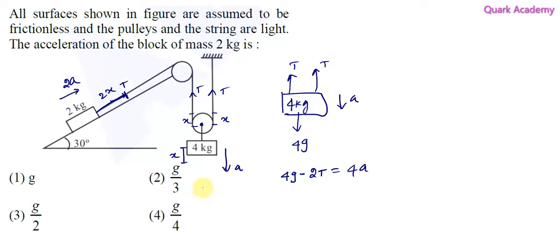When we consider the forces acting on this 2 kg mass, we will have mg. Of course, the normal force will be there, but we can take the component of this mg. This will be mg cos 30 degrees, and this side is going to be mg sin 30 degrees.